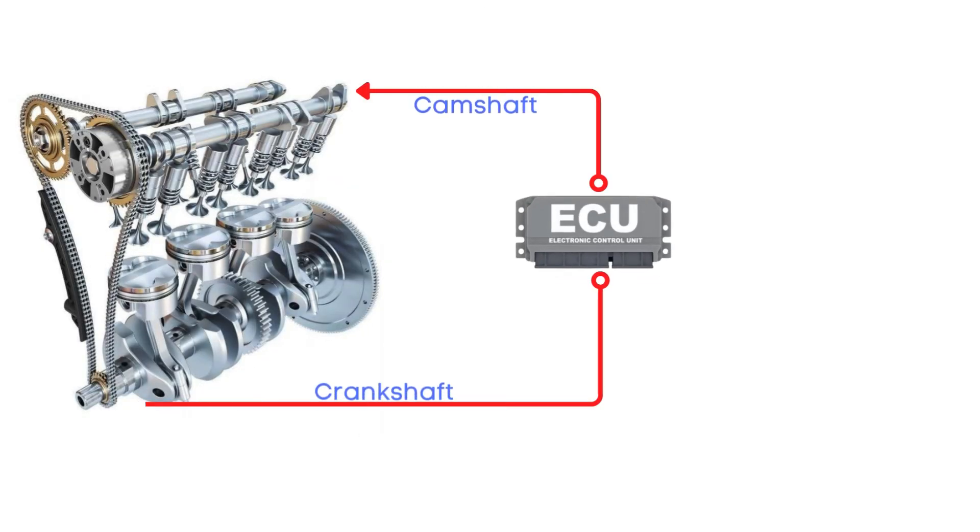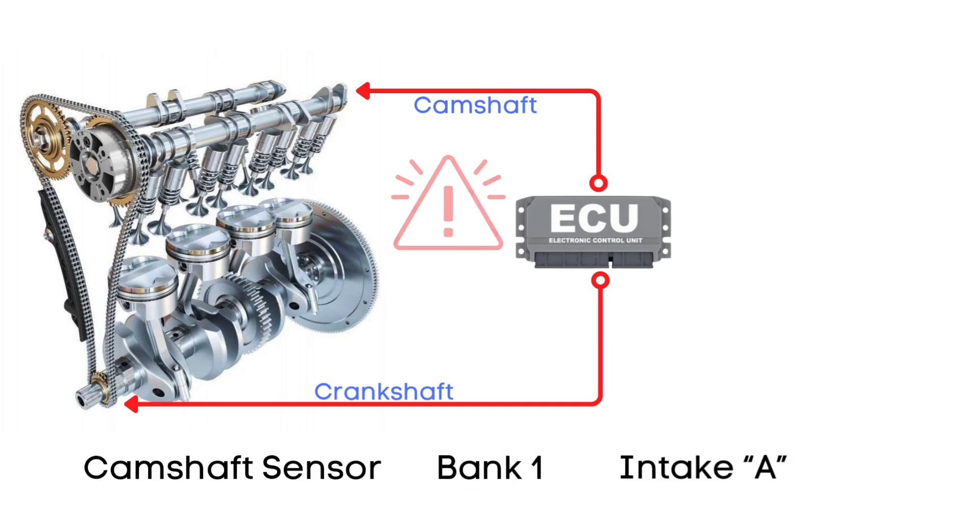The ECU regularly monitors the position of both the crankshaft and camshaft sensors. If it detects that the camshaft sensor for the bank 1 intake camshaft is out of alignment with the crankshaft, it triggers the P000A code to alert you of the issue.